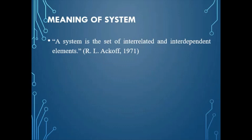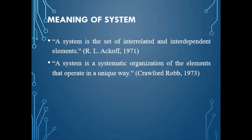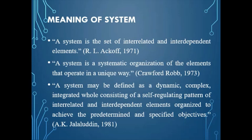Meaning of system: A system is the set of interrelated and interdependent elements. A system may be defined as a dynamic, complex, integrated whole consisting of a self-regulating pattern of interrelated and interdependent elements, organized to achieve the predetermined and specified objectives.